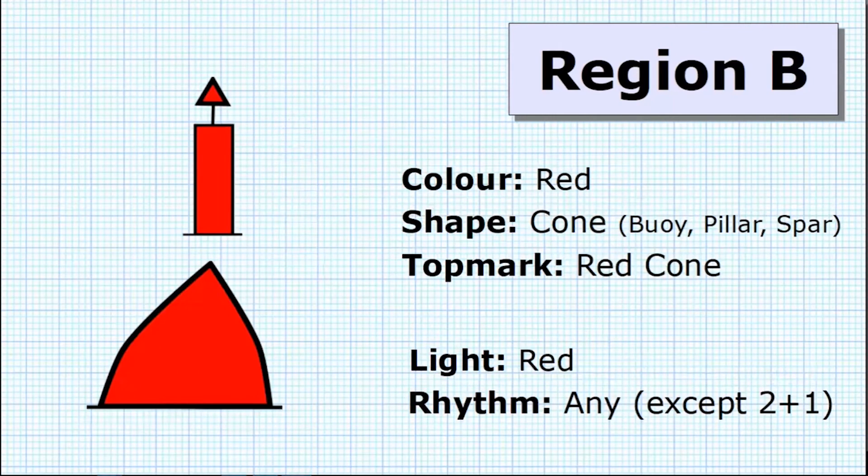Swapping over to Region B, we can see that the only thing that has changed again is the color. The main color of the buoy of course is now red, the top mark's color is now red and the light is also now red.